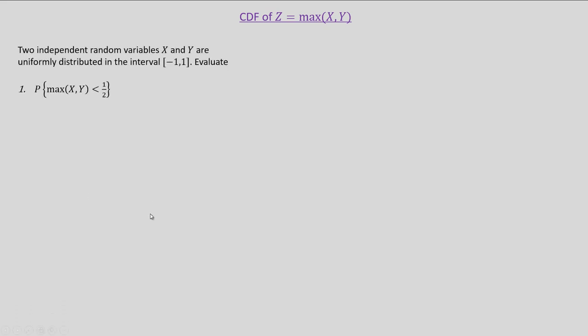There are two independent random variables x and y which are uniformly distributed between minus 1 and plus 1. We will try to evaluate the probability that max of x comma y is less than half.